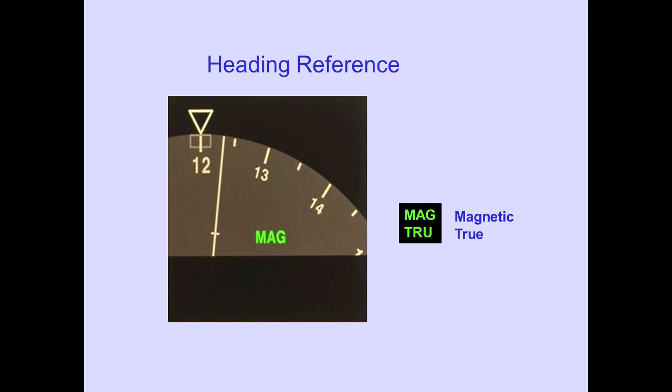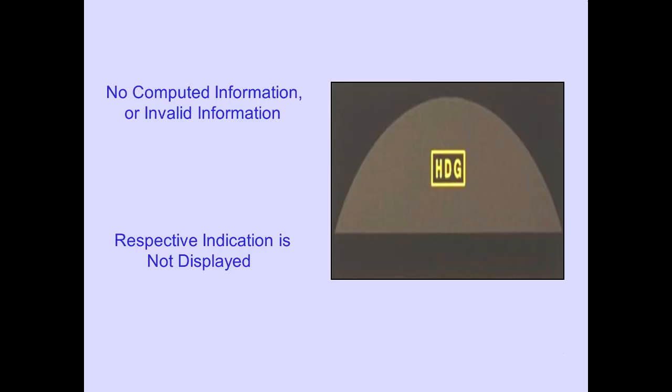The heading reference is also displayed — MAG for magnetic and TRU for true. If no computed information is received, or the information is determined to be invalid, the respective indicator is not displayed. If the heading information is invalid, a flag is displayed.